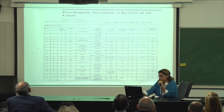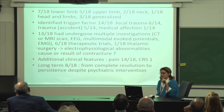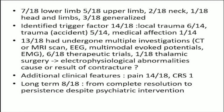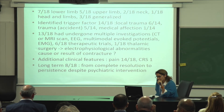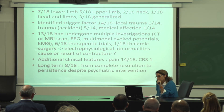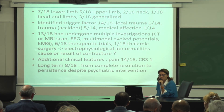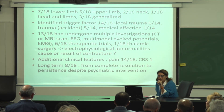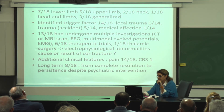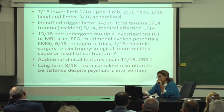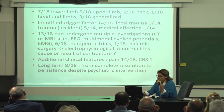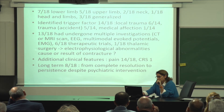The other series is from Lung with 18 patients, seven with lower limb deformity, three with an identified trigger factor in 14 — local or general trauma — and one for medical condition. Thirteen had undergone multiple investigations with sometimes electrophysiologic abnormalities, but we cannot say if these abnormalities are the cause or result of contracture. There was pain in 14 patients and complex regional syndrome in one. On follow-up of eight patients, there was complete resolution or persistence despite psychiatric intervention, with no data on remaining patients.